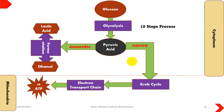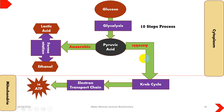We all know that the glycolysis process starts from glucose and it is a 10-step process which happens in the cytoplasm. The end molecule of glycolysis is pyruvic acid, and then pyruvic acid further leads to either the aerobic pathway or anaerobic pathway depending on the situation.